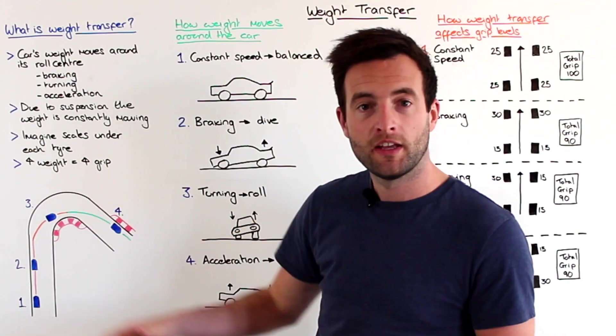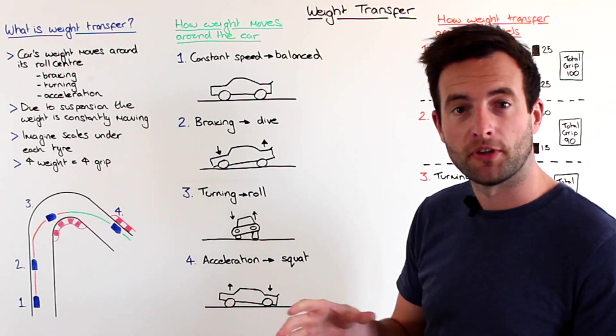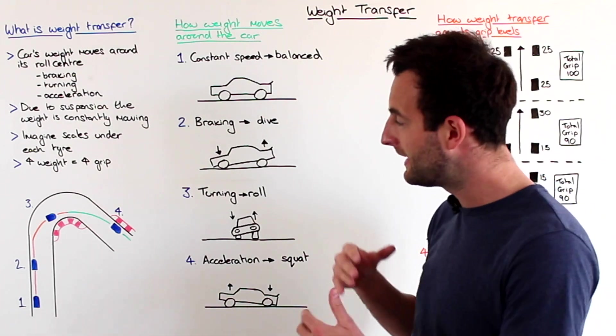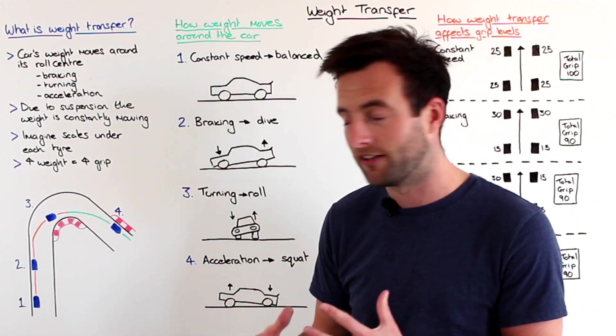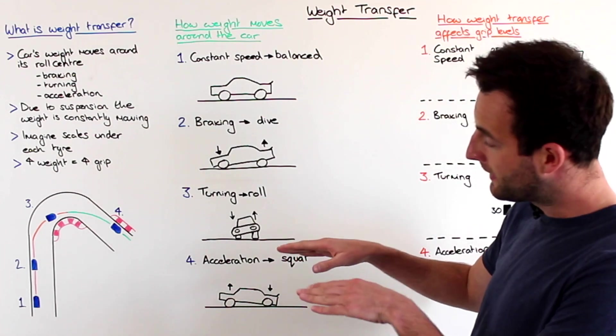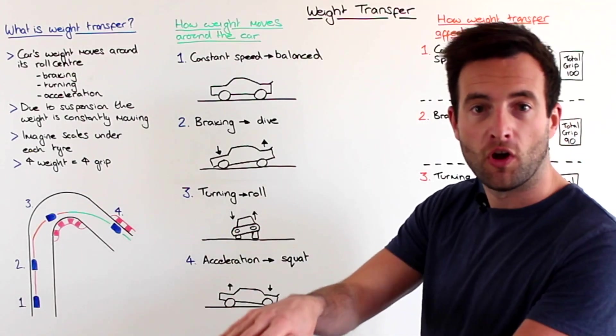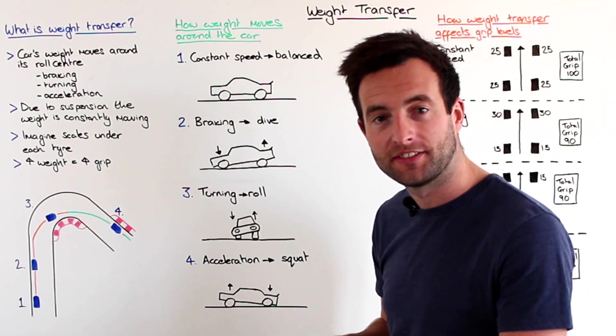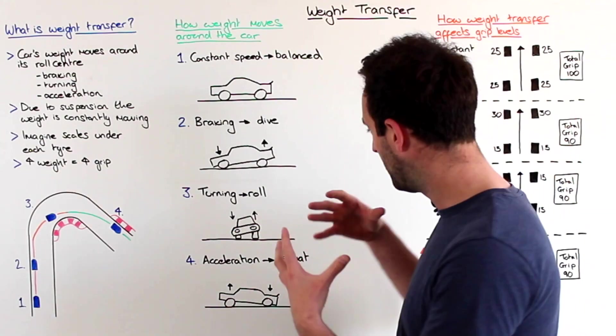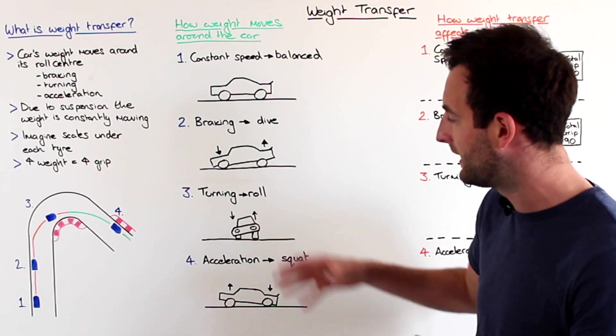At point three, where the car's turning as much as it possibly can, but it's neither decelerating nor accelerating, the car's weight has moved all the way to the outside tires. And we call this roll as you can see here.